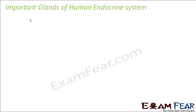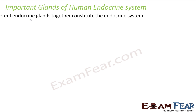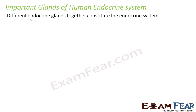Now these hormones are secreted by the various endocrine glands. So if we want to talk about the hormones, then we will first have to talk about the important endocrine glands. So let us quickly name the important glands of the endocrine system. Now all the endocrine glands together constitute the endocrine system. What are the important endocrine glands?